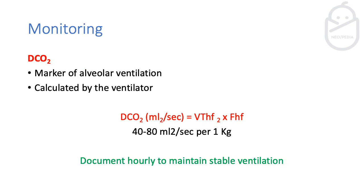Another monitoring parameter is the DCO2, which reflects how effectively you're ventilating the alveoli. It's calculated by the ventilator automatically. You need to ensure it runs between 40 to 80 mL²/second per kilogram — so for a 2 kg baby, the target range would be 80 to 160. Nurses should document this hourly to ensure stable ventilation is being maintained.